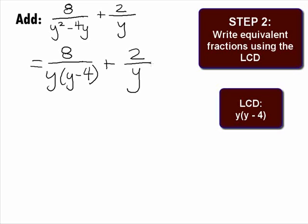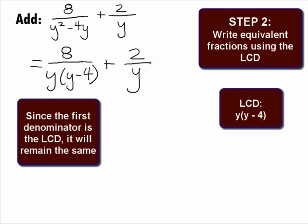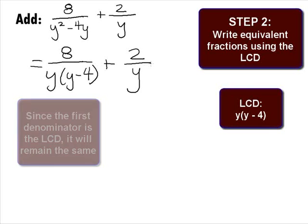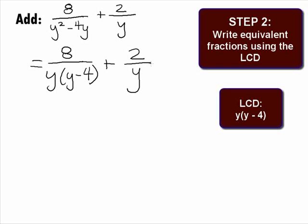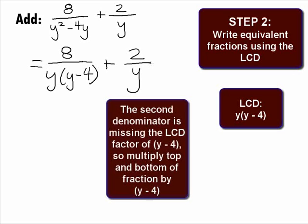In Step 2, we want to write equivalent fractions using the least common denominator of y times y minus 4. Our first rational expression already has the least common denominator of y times y minus 4, so we don't need to change that one. Our second rational expression is 2 over y. We want to multiply the numerator and denominator by the same thing so that the denominator becomes the least common denominator of y times y minus 4. The missing factor is y minus 4, so this is what we will multiply the numerator and denominator by, giving us an equivalent rational expression with the least common denominator of y times y minus 4.